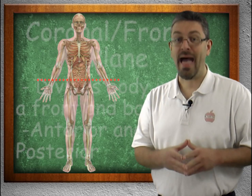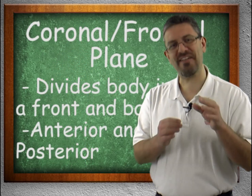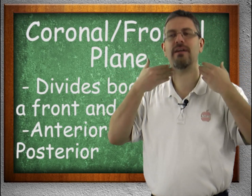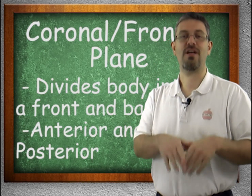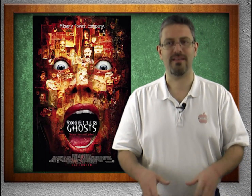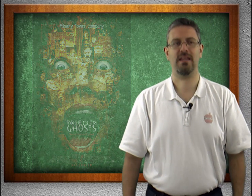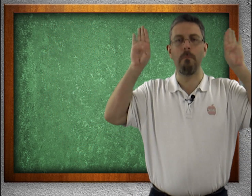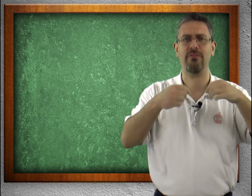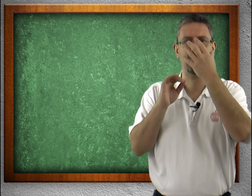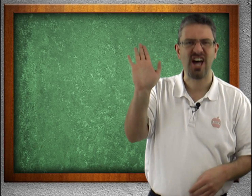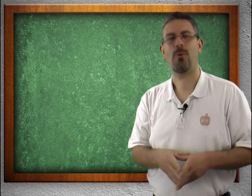A front and back cut — and I have a horror movie reference for this one too — is called a coronal or frontal plane. It cuts like this, creating a front part and a back part. Horror movie reference: 13 Ghosts. There's a part where a lawyer is backing up, triggers something, and a glass door slices through him. His glasses fall off, his tie falls down, and the front part of his body slides down the glass while the back part is stuck to it. That is a coronal or frontal plane.